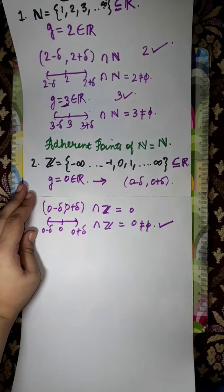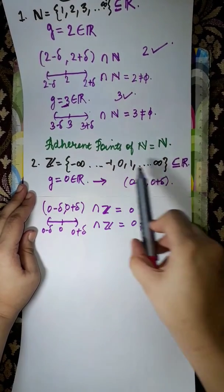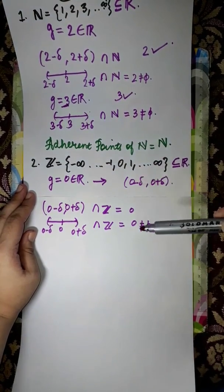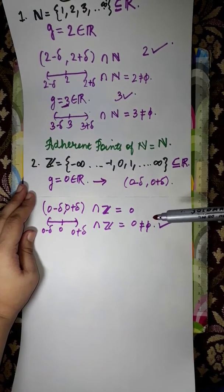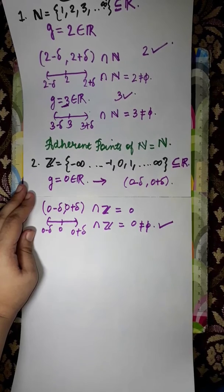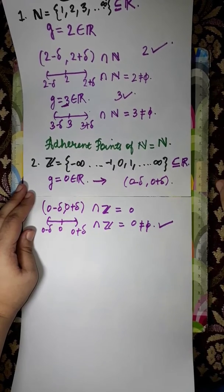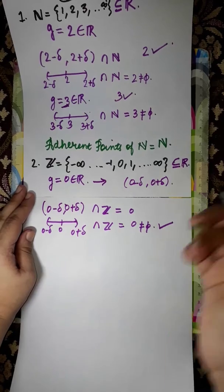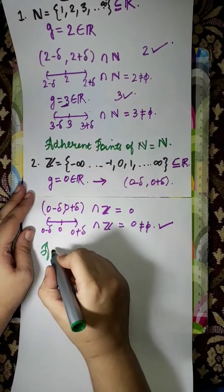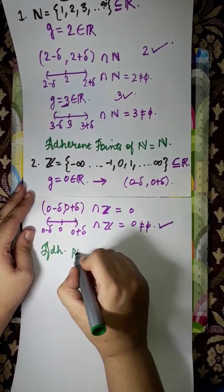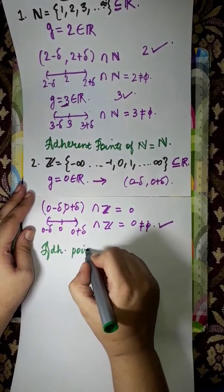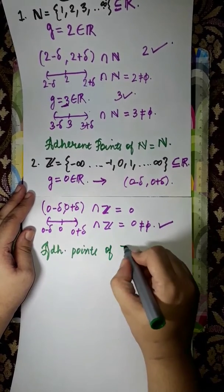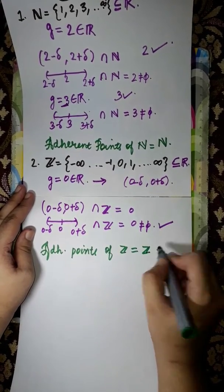Similarly, every number of integers will also yield a non-empty intersection. This means all numbers of integers are adherent points of integers. So the adherent points of ℤ equals ℤ.